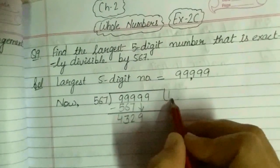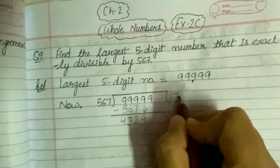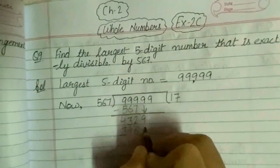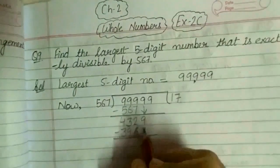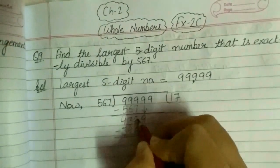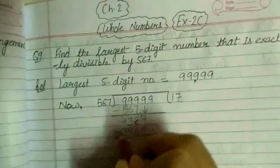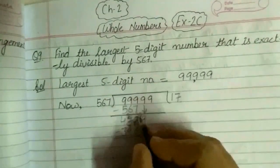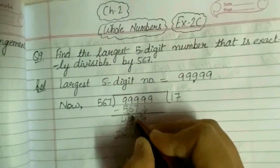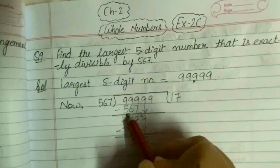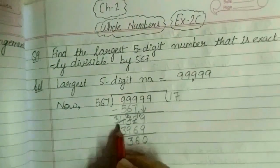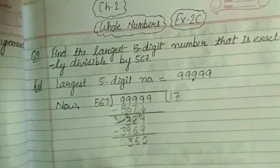Now the next number you can take here is 7, because 567 sevens are 3,969. Now subtract them. 9 minus 9 will give me 0. Now 6 cannot be subtracted from 2, so we will carry — it will become 12 and this number will become 2. 12 minus 6 will give me 6. Now this 9 cannot be subtracted from 2, so we will carry — it will become 12 and it will become 3. 12 minus 9 is 3 and 3 minus 3 is 0.